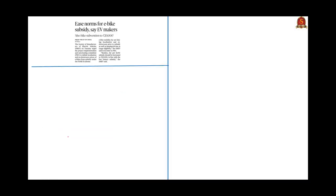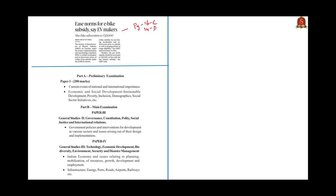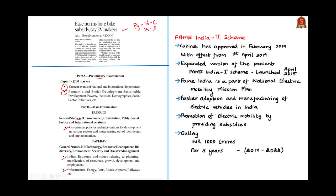Moving on to the next news analysis, which talks about the FAME India 2 scheme, which appeared on page number 16 of the Chennai edition and page 14 of the Delhi edition. The aspects of this article can be covered under the UPSC Civil Service Examination syllabus in preliminary examination under current events of national and international importance and economic and social development, and in mains examination under GS Paper 2 government policies and interventions for development in various sectors, and in Indian economy under topics of infrastructure, energy, ports, roads, airports and railways.